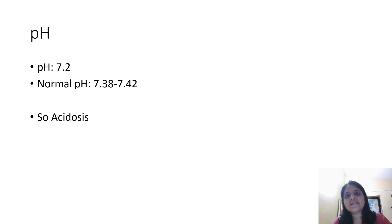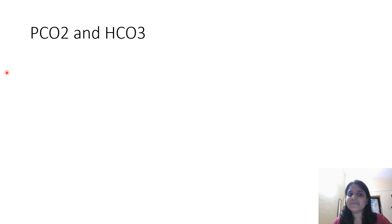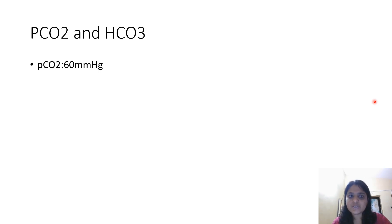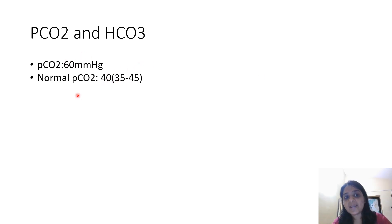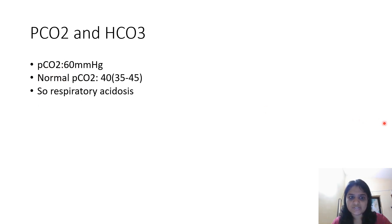Now we have to see whether it is respiratory or metabolic. PCO2 is the respiratory component and bicarbonate is the metabolic component. The given PCO2 is 60, which is high, because normal ranges from 35 to 45 with an average of 40. High PCO2 means the respiratory component is high, which means it is respiratory acidosis.